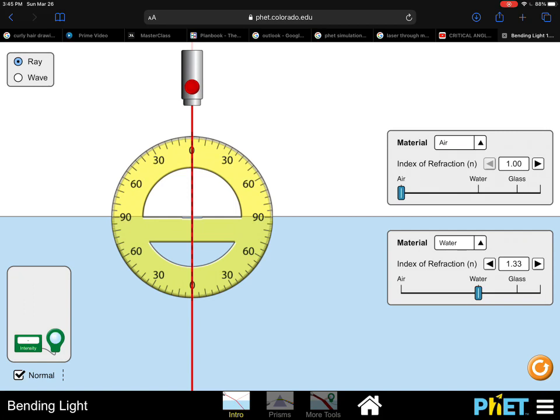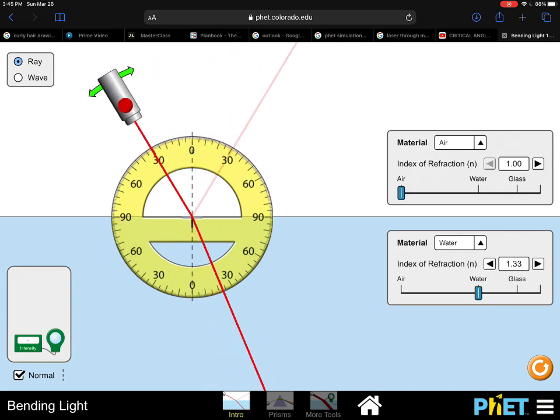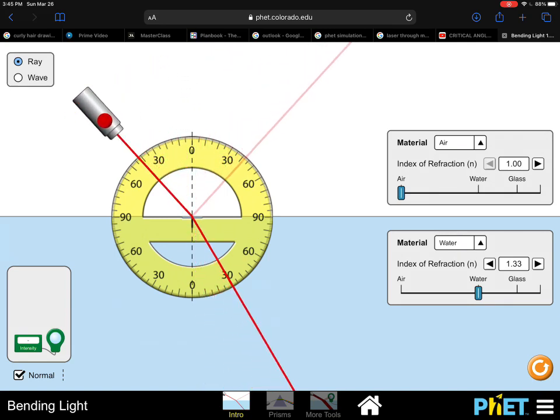In this example, I'm going to be working with water and air. Water has an index of refraction of 1.3. As I move the laser, you can see that the light bends towards the normal line when it hits the water. Why is that?